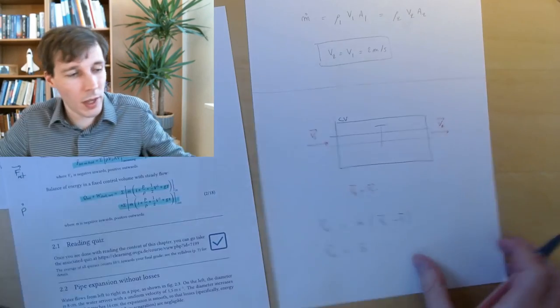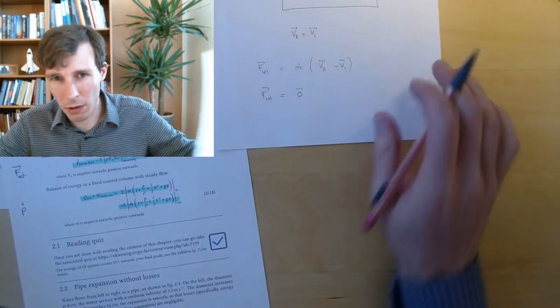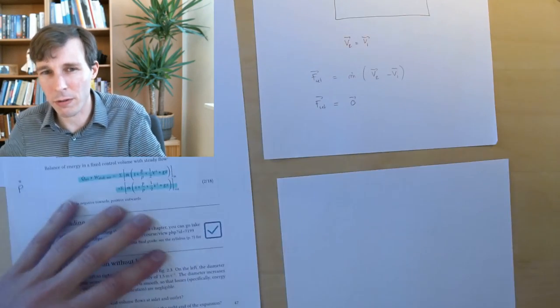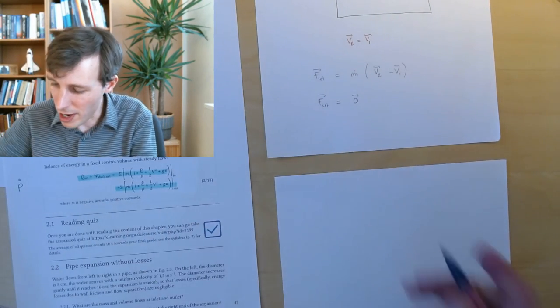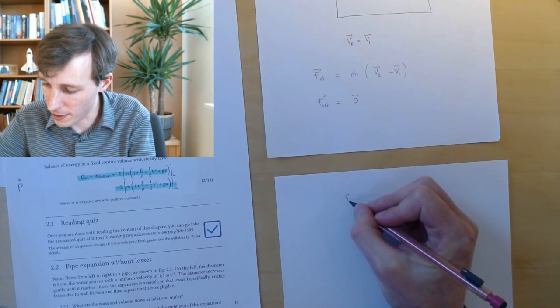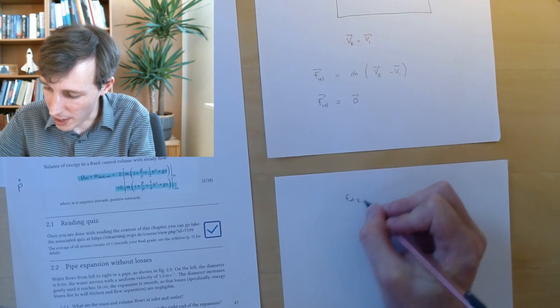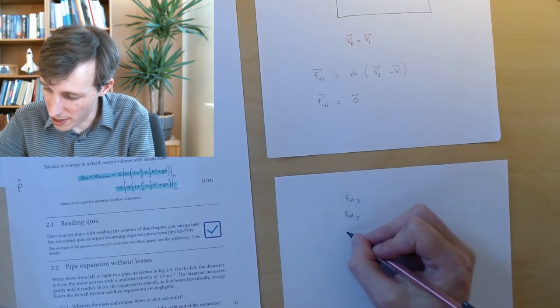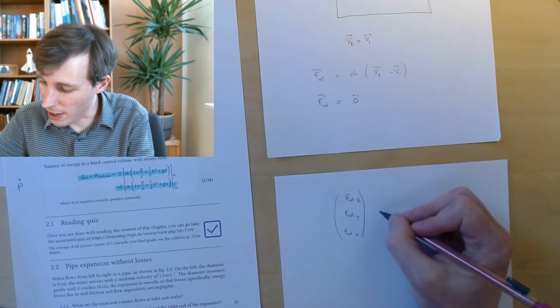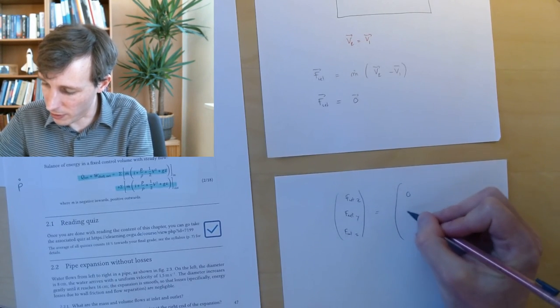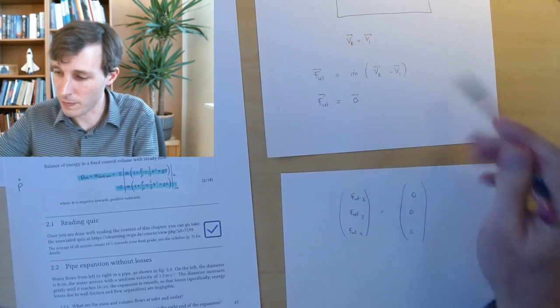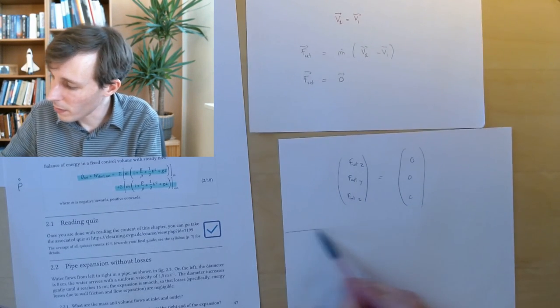F net is vector zero. Just to be clear, this is a vector. Just for you to remember that arrows, equations with arrows, have many dimensions. I could write it as the three components of F net: F net X, F net Y, and F net Z. This is a vector, and this vector equals zero, zero, zero. You don't have to do this, I just want to make clear this is actually three equations.